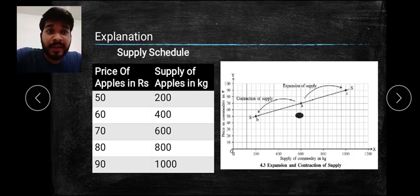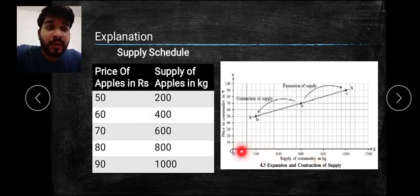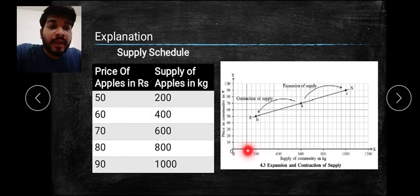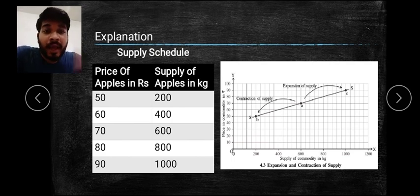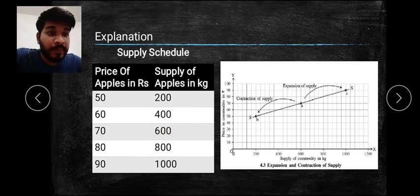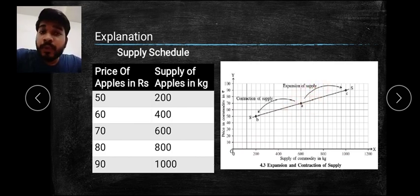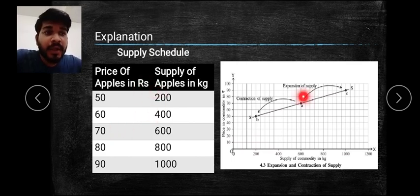To understand it clearly in diagrammatic form: on the X-axis we have supply of commodities and on the Y-axis we have price of commodities. We have taken a 2-centimeter gap where 200 units of kilograms are represented, and on the Y-axis a 1-centimeter gap represents 10 rupees. Initially the price is 70 and the supply is 600, so this is our starting point A.